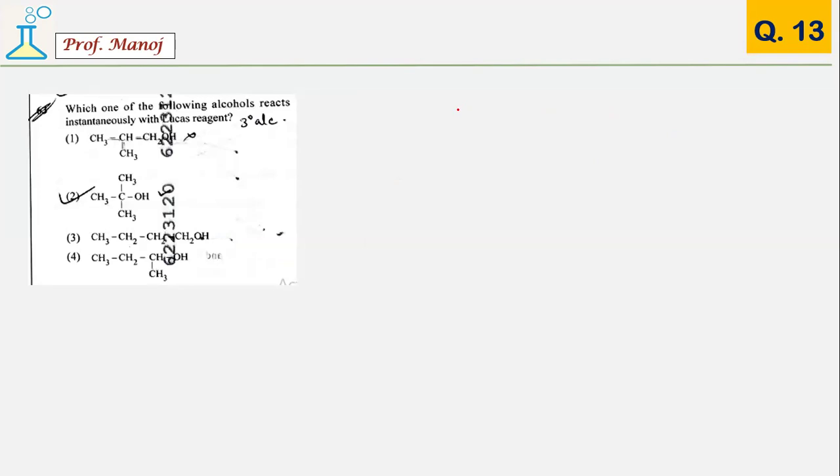One of the easiest questions from alcohol chapter or practical chemistry. The one which instantaneously reacts with Lucas reagent has to be a tertiary alcohol, and they have clearly given option number 2 as the tertiary alcohol.